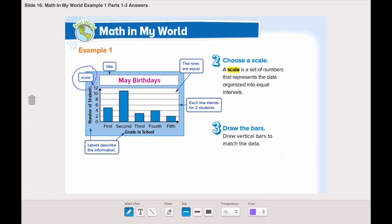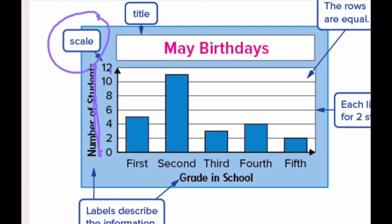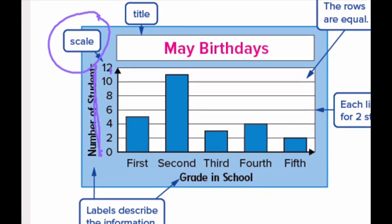Now let's take a look at the scale. We have a scale from 0 to 12, so the scale is not only 1. This scale shows the number of students, so we need to label this part as the number of students. On the other side of the graph we have 1st, 2nd, 3rd, 4th, and 5th — these are the grade in school. These two labels are very important; they describe the information.